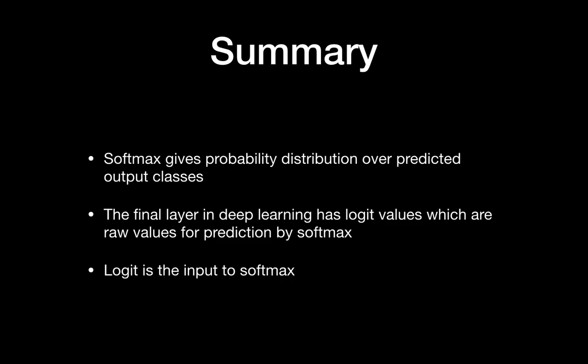The final layer in the deep learning model has logit values, which are the raw values for prediction used as input to softmax. The logit is the input to the softmax. Thanks for watching, and I'll see you in the next video.